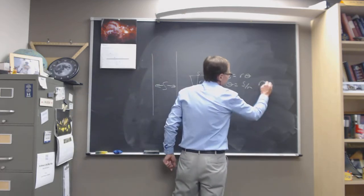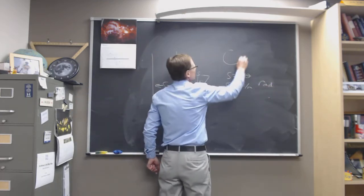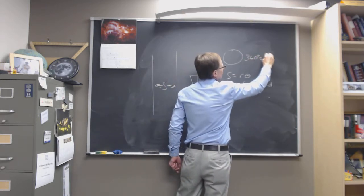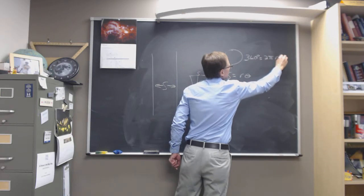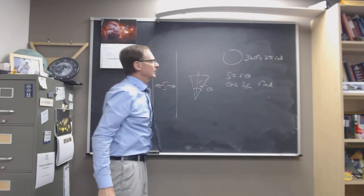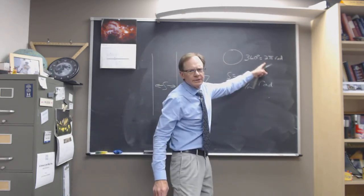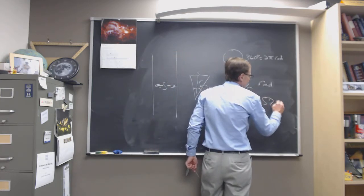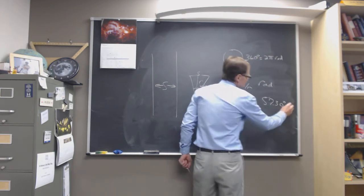Now this only works if theta's in radians. Remember that a full circle has 360 degrees, but it also has two pi radians. So you can do that division. 6.28 is 2 pi, 360 divided by 6.28 is going to give you 57.3 degrees per radian.